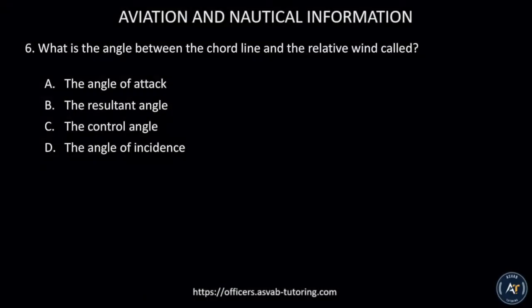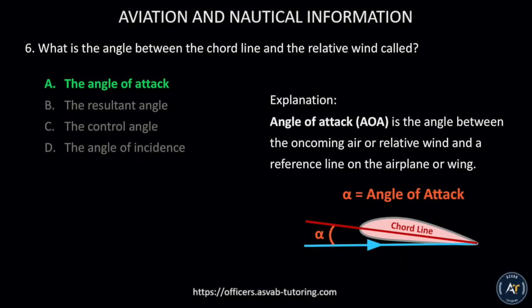Number six: What is the angle between the chord line and the relative wind called? A) The angle of attack, B) The resultant angle, C) The control angle, or D) The angle of incidence. The correct answer is A, the angle of attack. The angle of attack is the angle between the oncoming air or relative wind and a reference line on the airplane or wing.